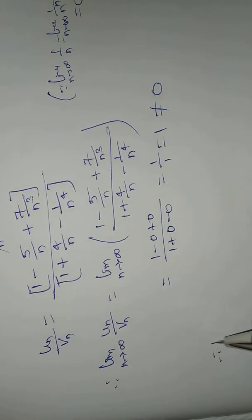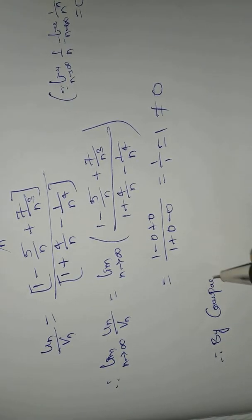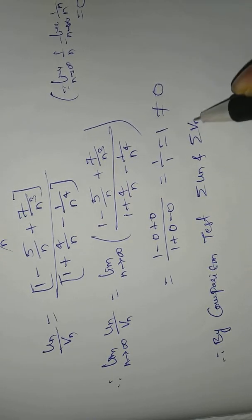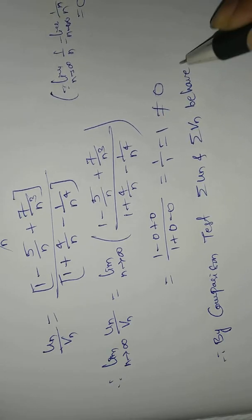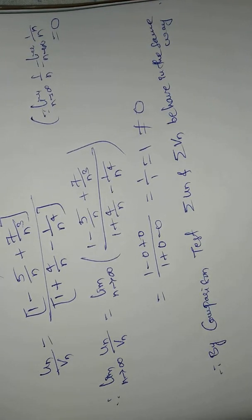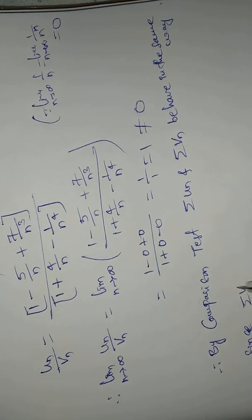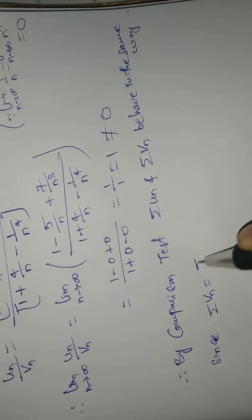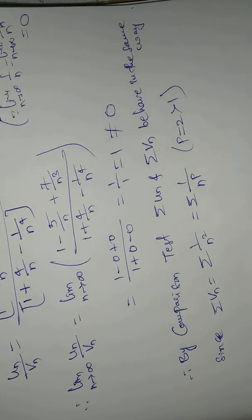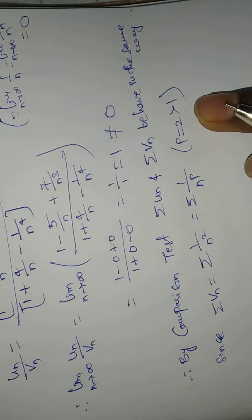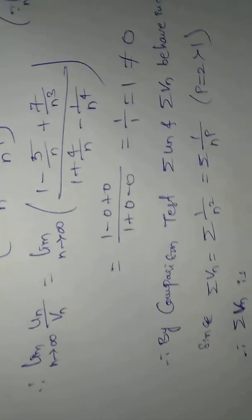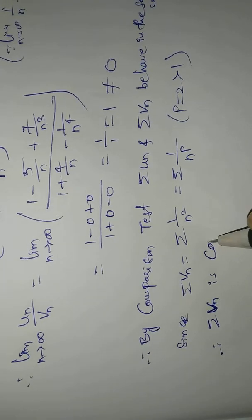Therefore, by the comparison test, summation uₙ and summation vₙ behave in the same way. Since summation vₙ = summation 1/n² = summation 1/nᵖ where p = 2, which is greater than 1, therefore summation vₙ is convergent.